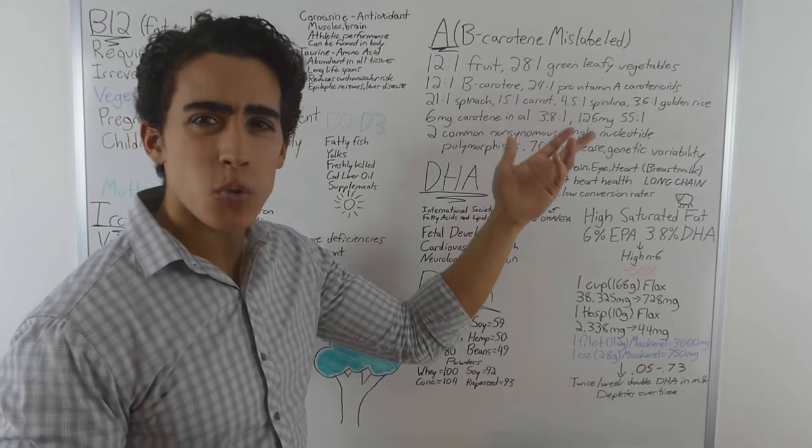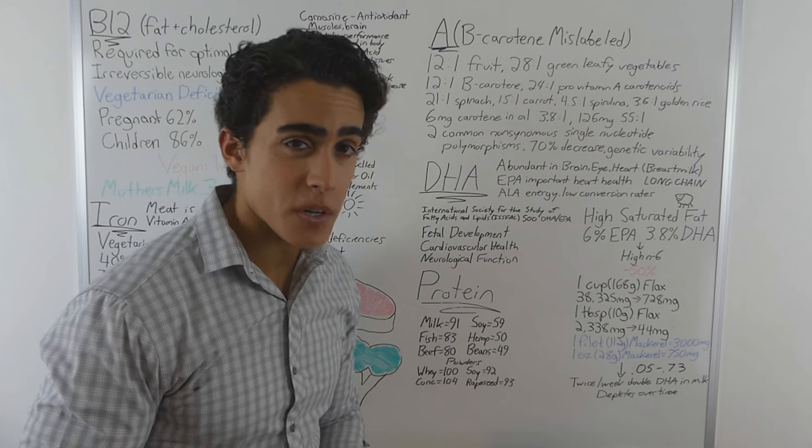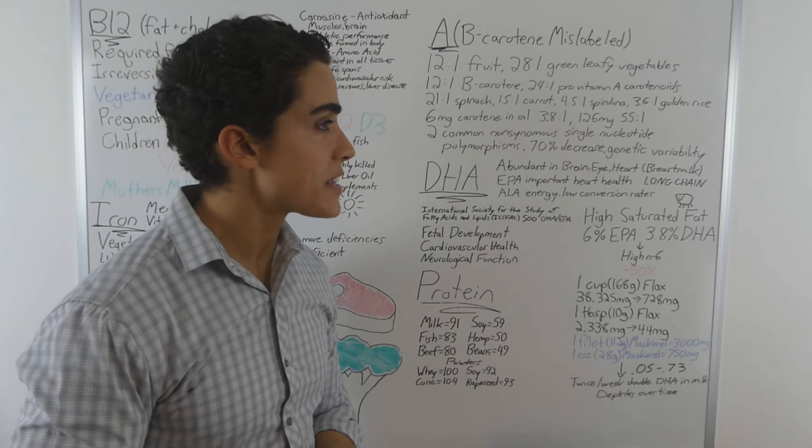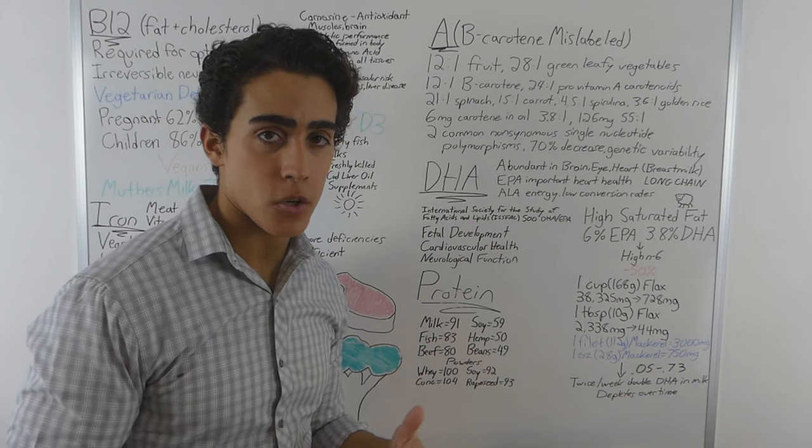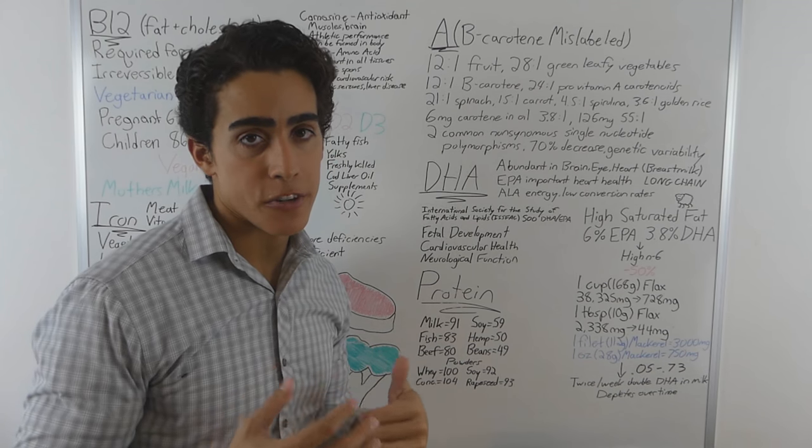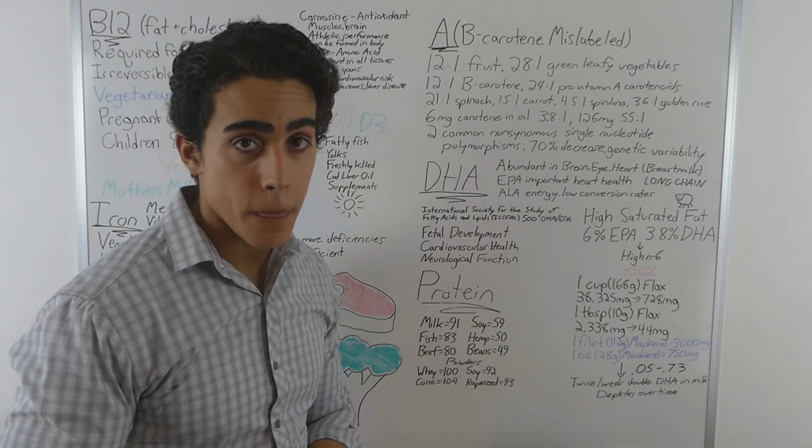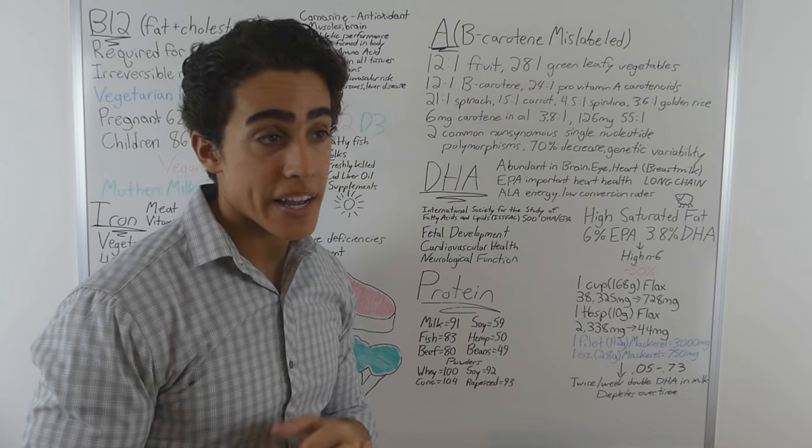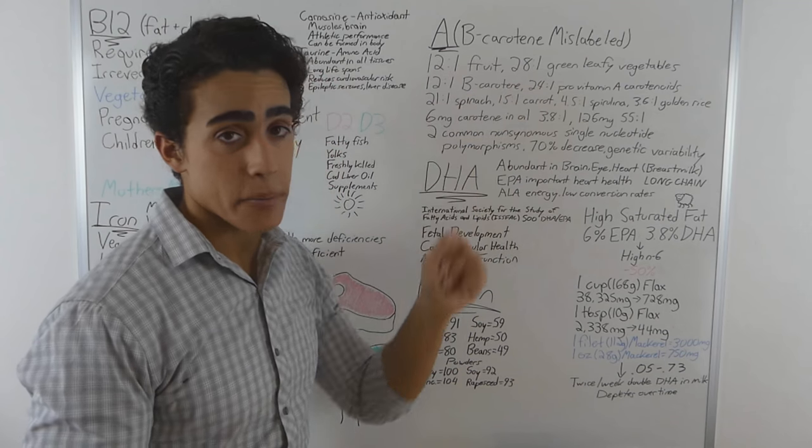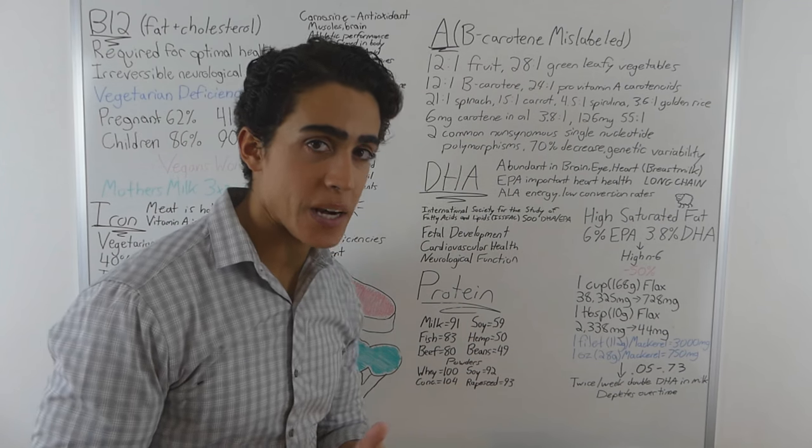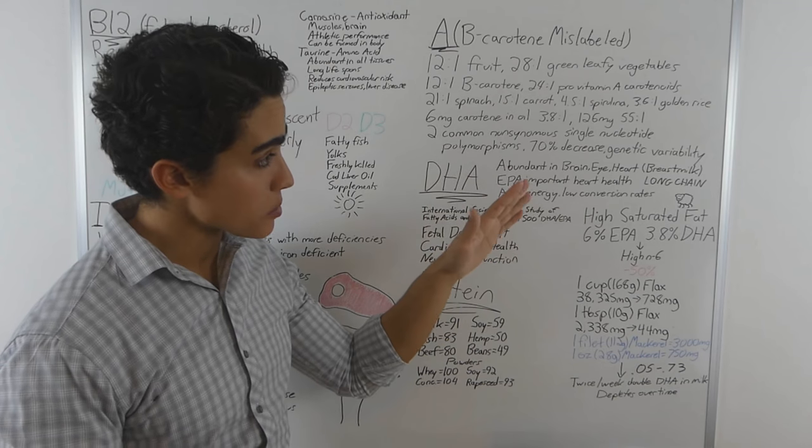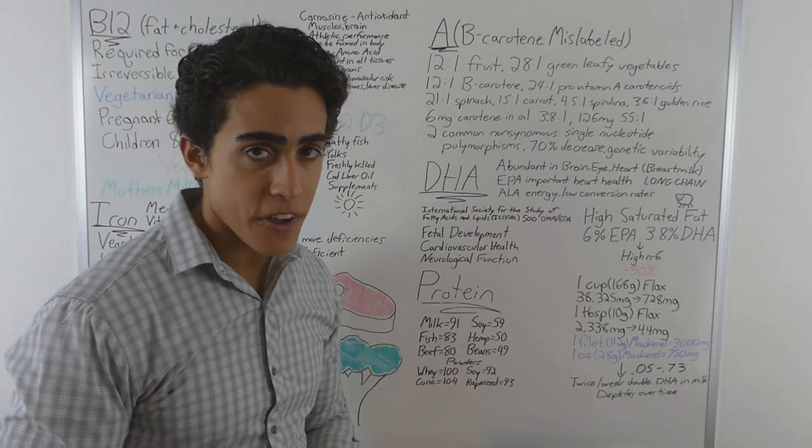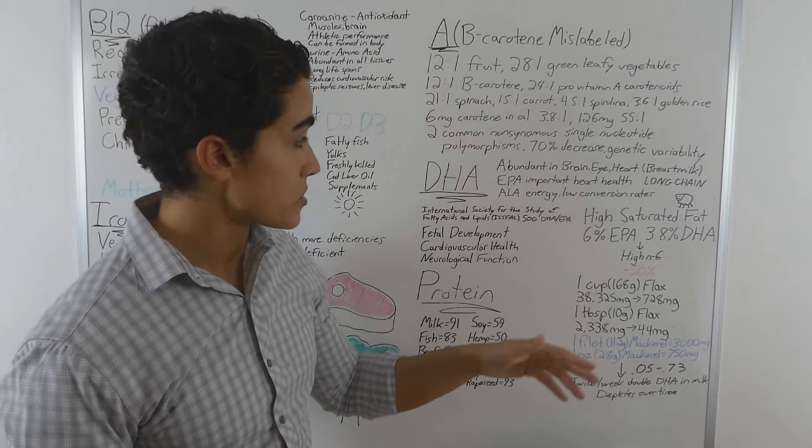126mg, 55 to 1. So 3.8 to 1 sounds pretty good, but 55 to 1? What this tells us is that either the body cannot convert carotenoids in a large amount in an efficient way, and that's definitely true. What it also tells us is we need fat to absorb and convert carotene to vitamin A. And this means we need animal foods, because as I said, animal foods are the only source of fat in all parts of the world, in all regions.